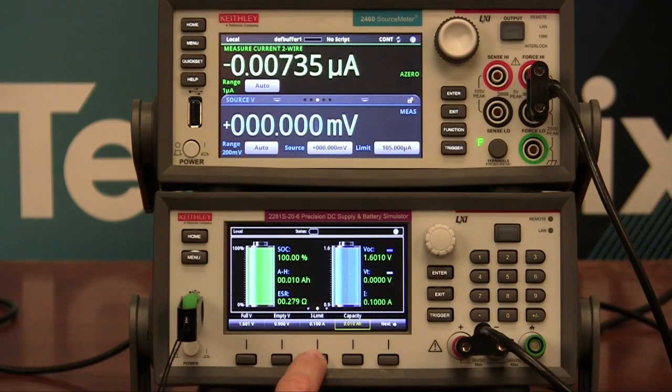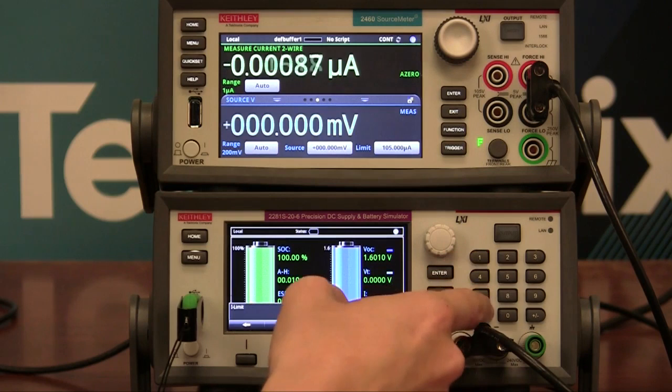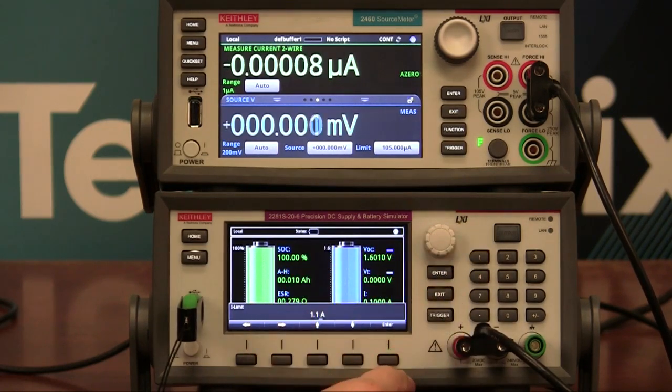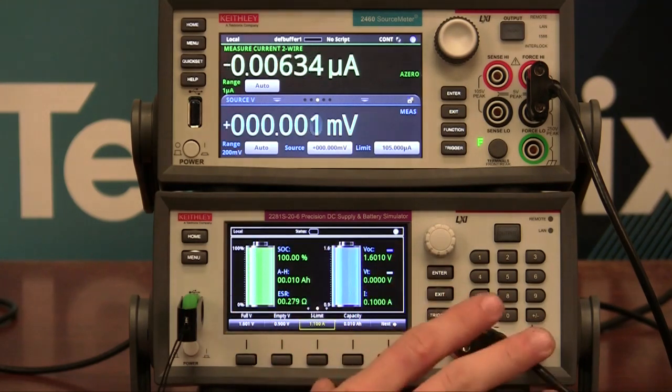Because we're discharging an amp, we need to set the I limit to be greater than an amp, so that the 2281 doesn't go into current limit mode. So into here, change this to 1.1 amps. Press Enter. Now this is ready to go.